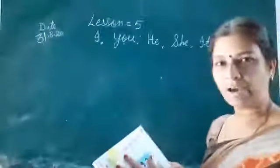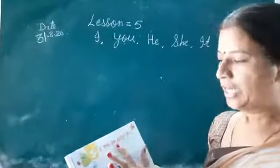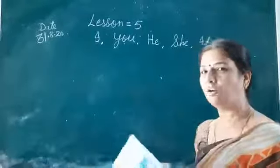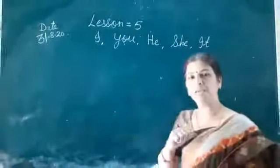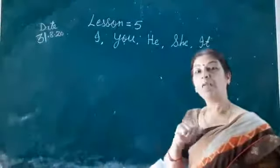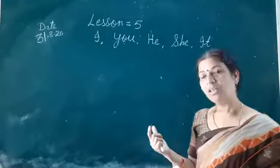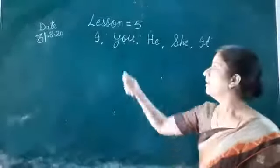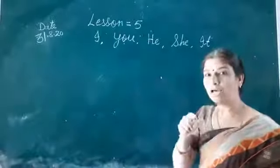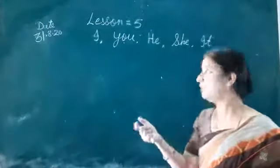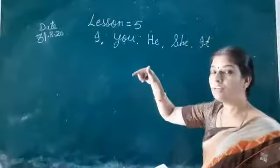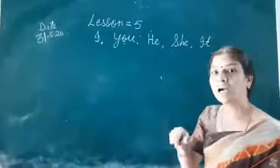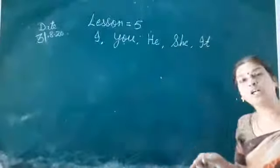What is the meaning of I, you, he, she and it? You all know. I means me — I am a teacher. You will say: I am a boy, I am a girl. You — you are a boy, you are a girl. He — he is a boy. She — she is a girl. It — it is a dog.